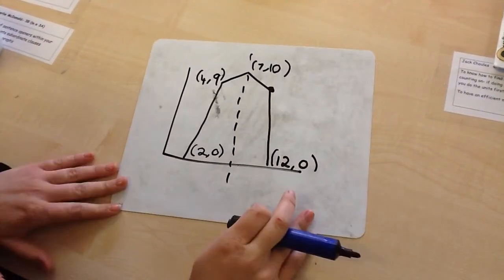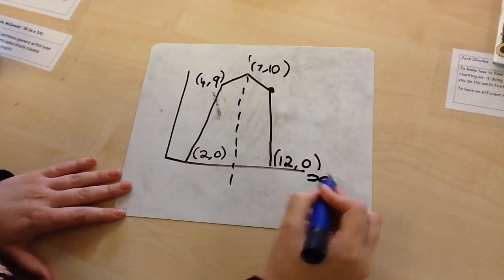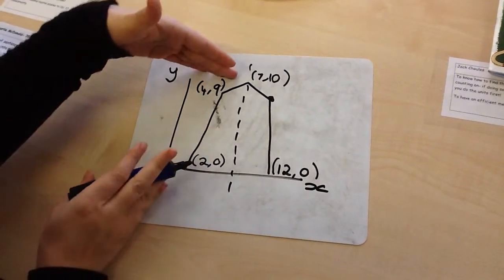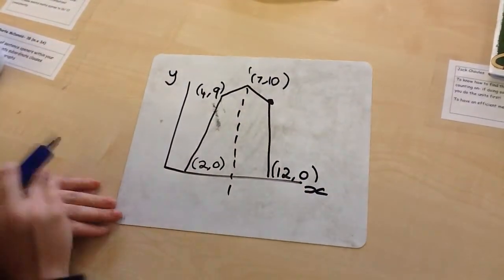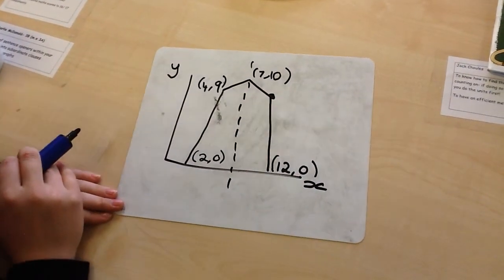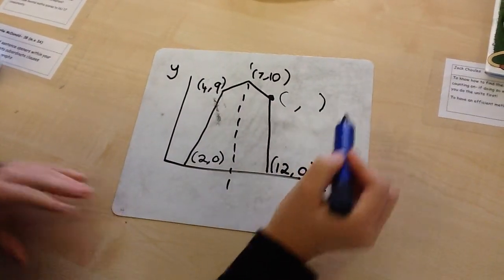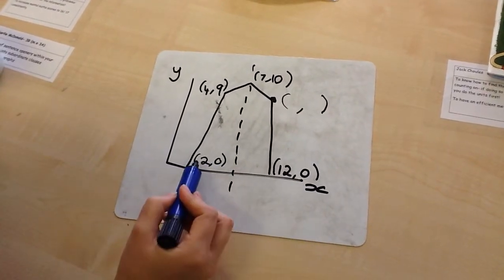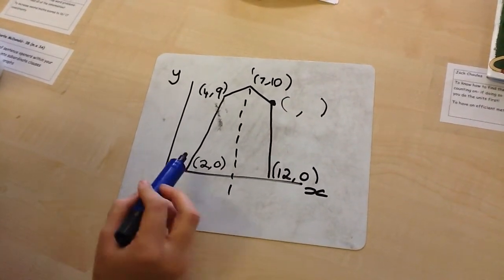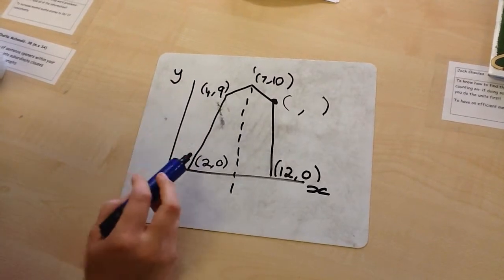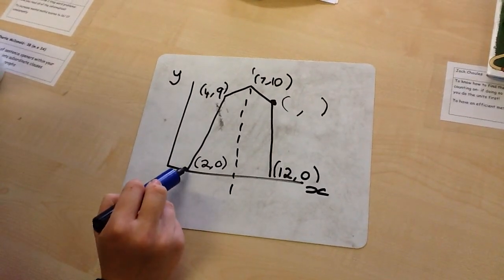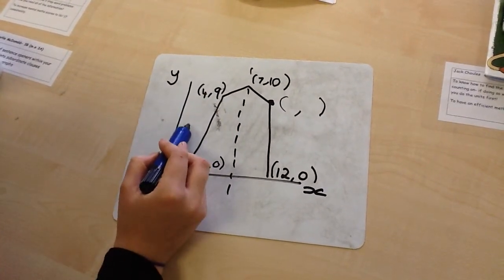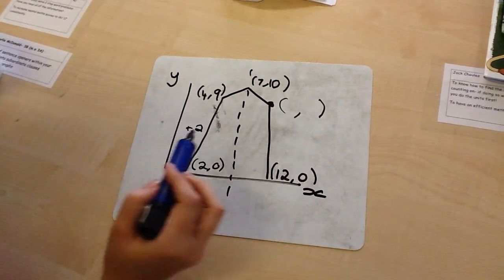Sometimes we get ones like this. What this dotted line means is that this shape is symmetrical, so this side is exactly the same as this side. When trying to find the coordinates here, I have information I can work with. If this side is exactly the same as this side, I can work out the difference between this point and this point — the difference between my x-axis between these two points is plus 2, so I have that bit of information to work with.